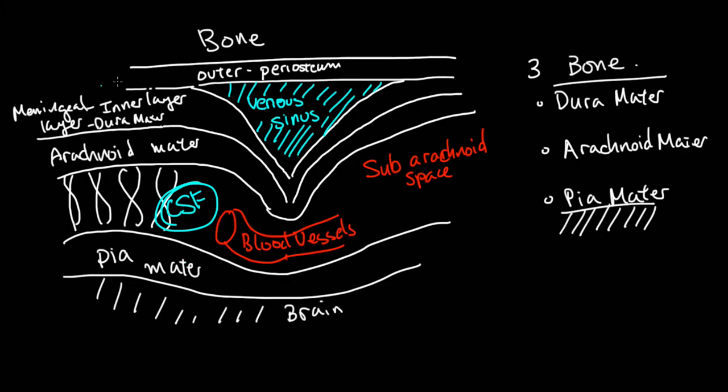You've got trabeculations, pia mater, and we've gone through all that. One final thing we can go through is just what happens to the CSF and where the CSF goes. We can go through in another video where the CSF is produced, but since we're here already,